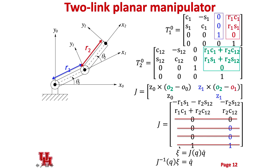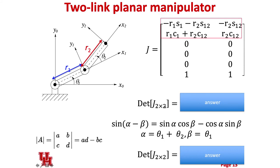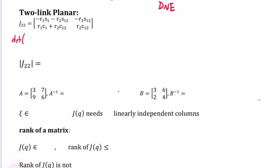If we want to invert this to find how fast joints should move to achieve an arbitrary velocity, we take the inverse of the 2×2 sub-Jacobian J₂₂. Whenever this is invertible we can achieve arbitrary x and y velocities. But there are certain configurations q where that isn't possible. To find them, we need to find where the determinant of J₂₂ equals zero. Let's compute that determinant.